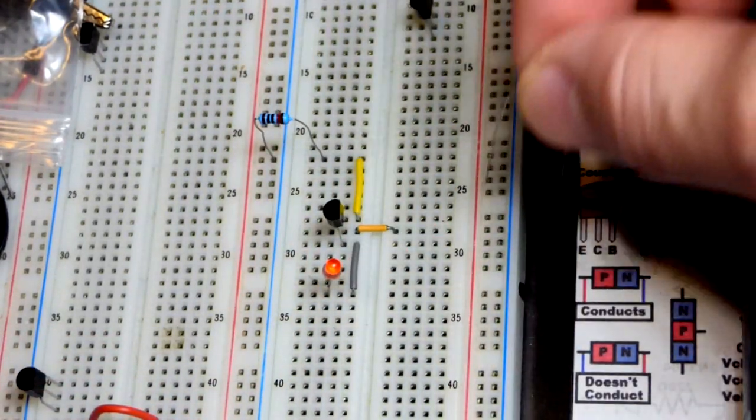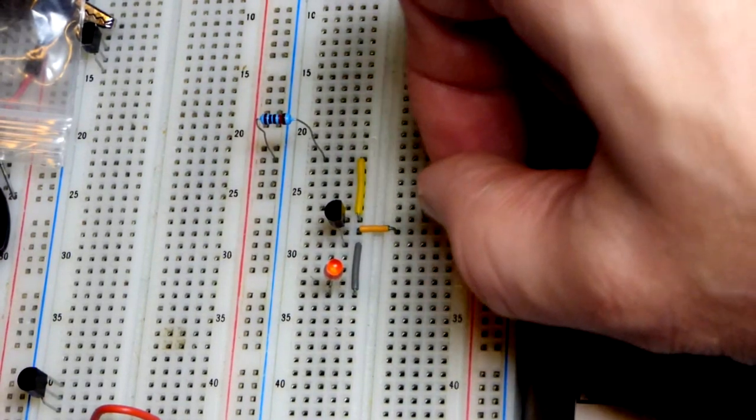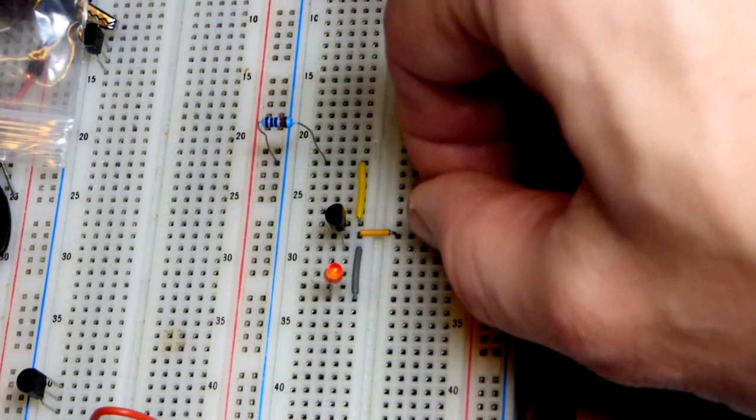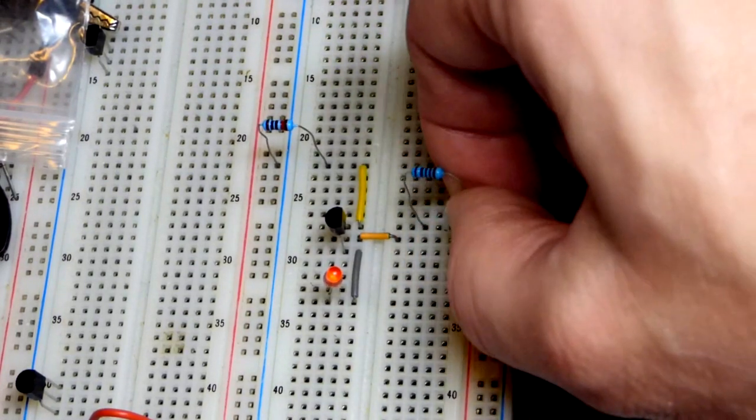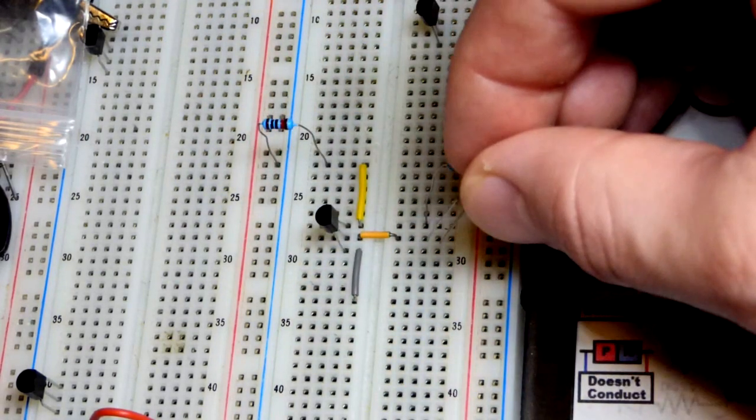So, we're just going to quickly swap these around. And this resistor, again, will go towards the more positive side of the supply there. And we'll put it one row away from that jumper. These resistors are kind of thin-leaded, so they bend a little easier.